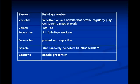Let's take a look at this problem in terms of the concepts we've been talking about for a long time. In this case, an element is a full-time worker. Variable: whether or not a person admits that he or she regularly plays computer games at work. Values: yes or no, it's just a binomial variable. Population: all full-time workers.